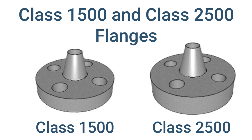Finally, at the higher end, we have class 1500 and class 2500 flanges. These classes are reserved for extremely high pressure systems like power plants or refineries. They are engineered to handle intense conditions and maintain a secure seal under immense stress.